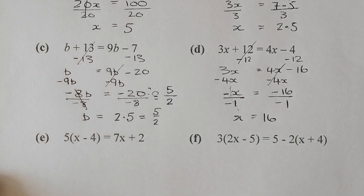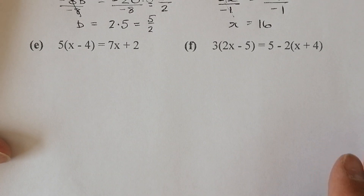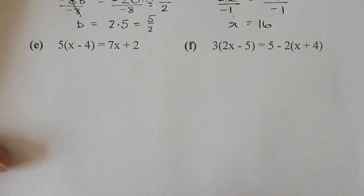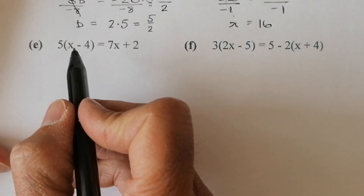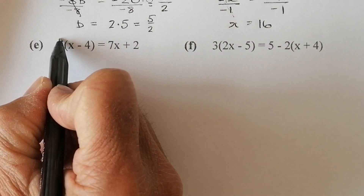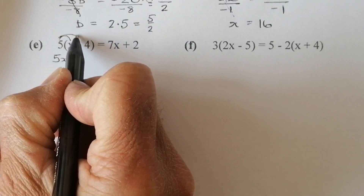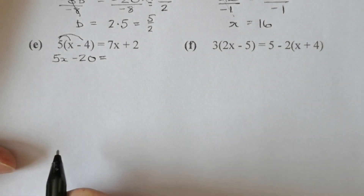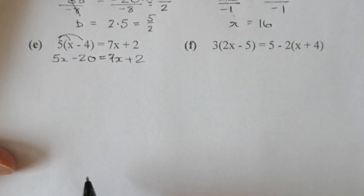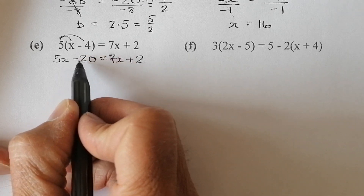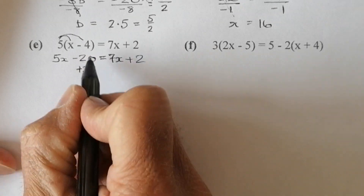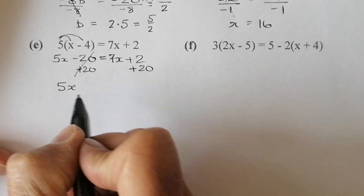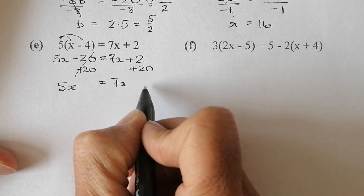Now introducing some bracket work — with brackets we'll get letters on both sides and solve from there. Multiplying out the bracket on the left-hand side first: 5 times x gives 5x, and 5 times minus 4 gives minus 20. On the right-hand side I've got 7x plus 2. I get rid of the minus 20 by adding 20 to both sides, leaving 5x equals 7x plus 22.